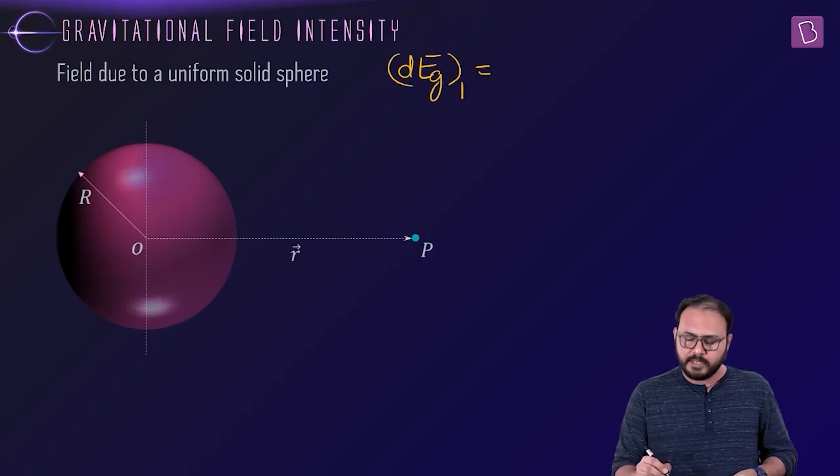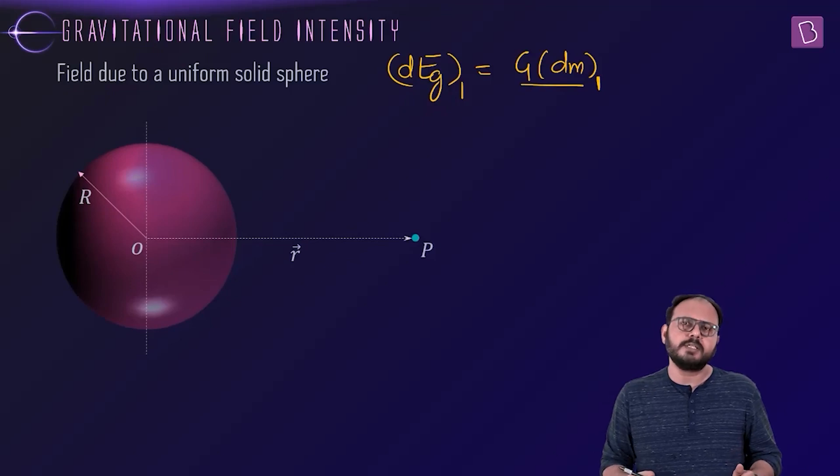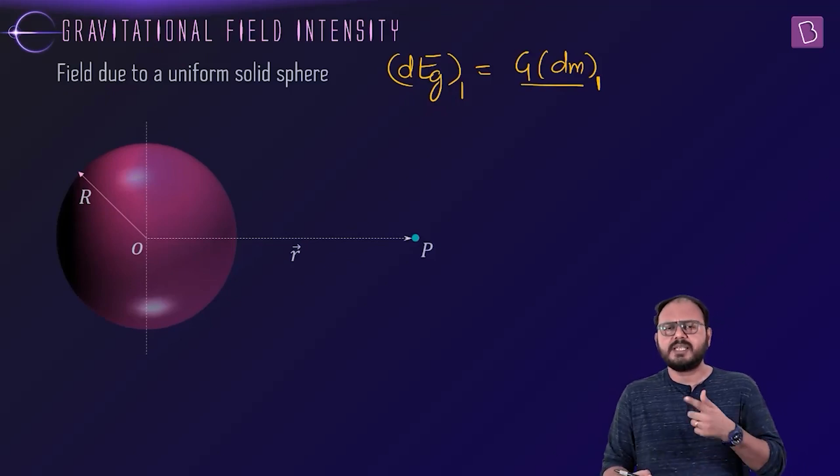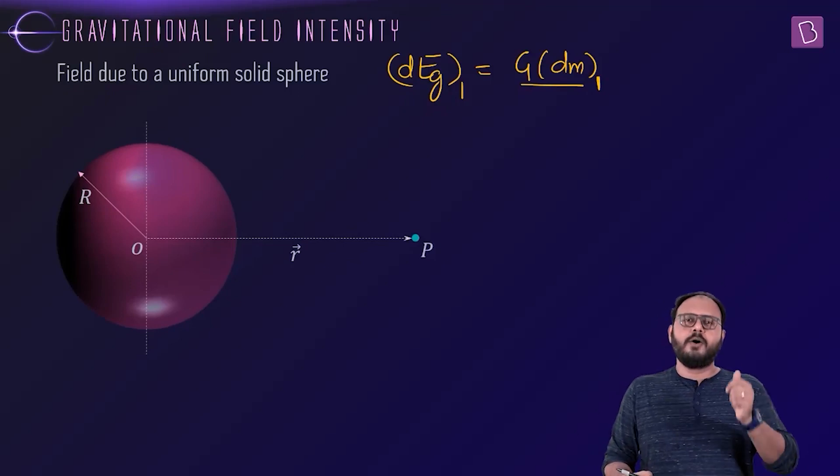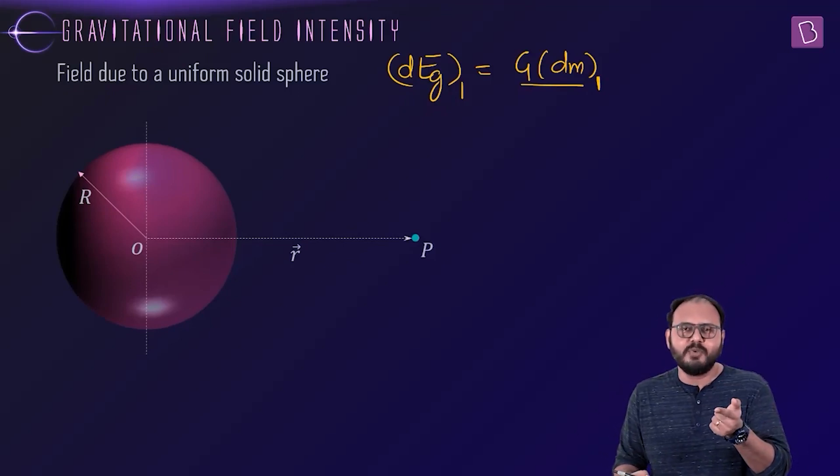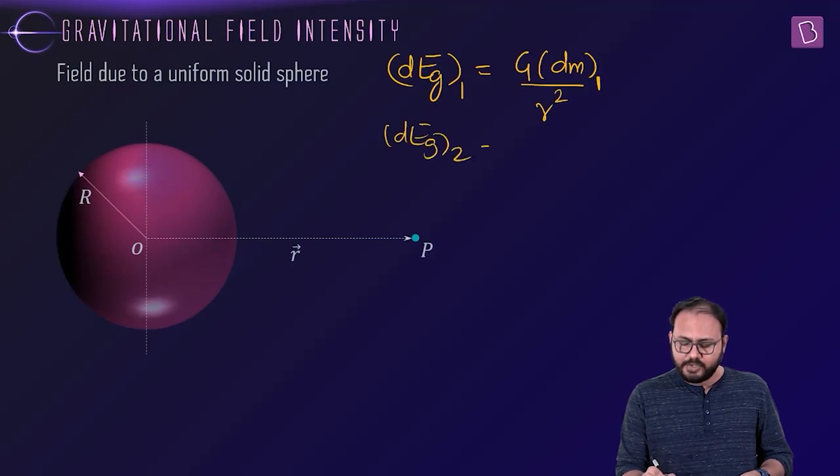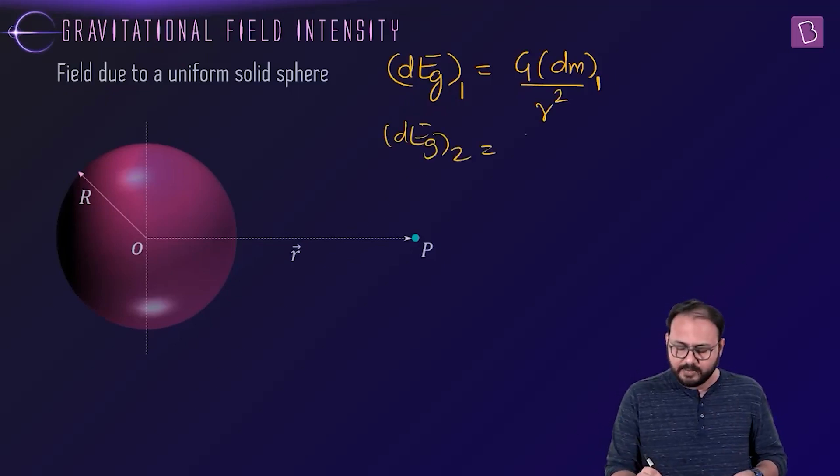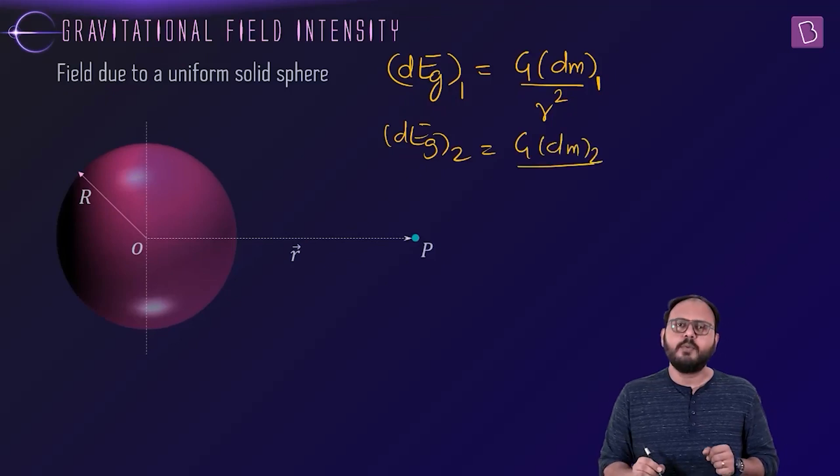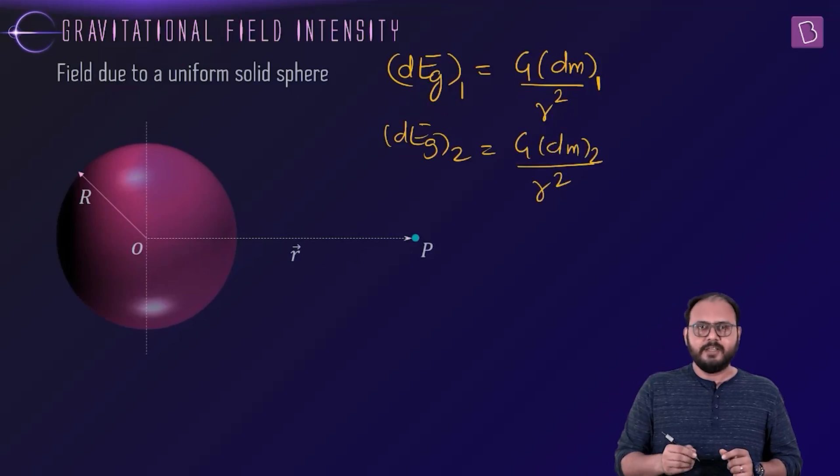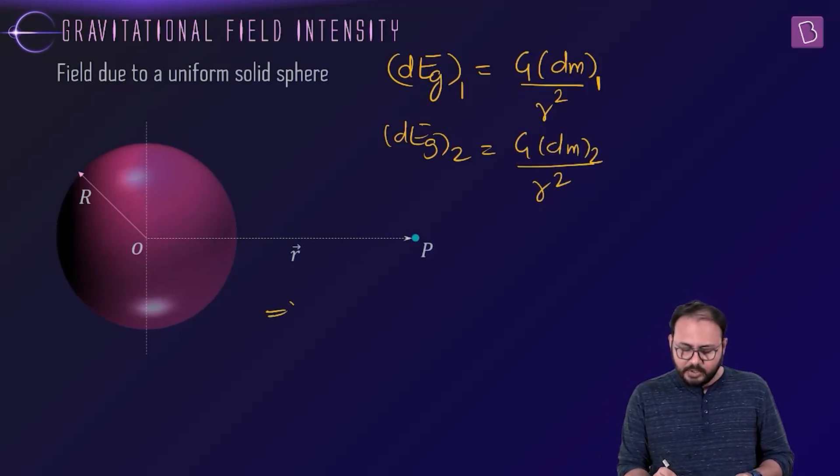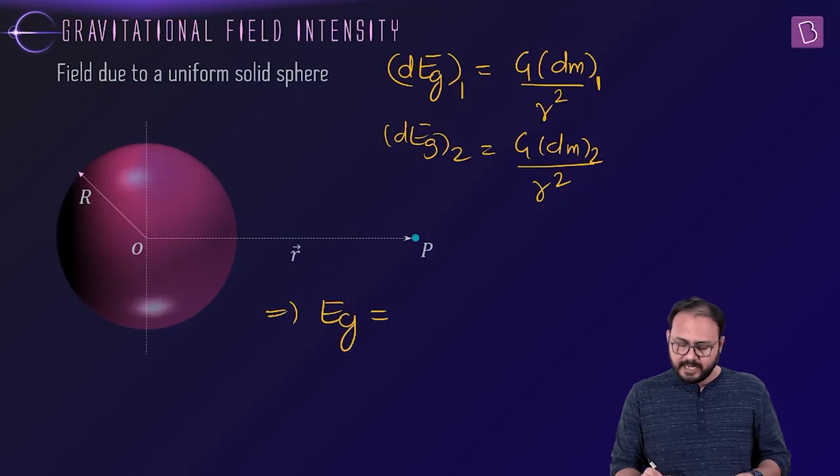Let's say the first shell makes dEg1. Can I say g dm1 upon what? Upon its own radius? No. Shell theorem says it's an outside point, so assume the mass to be focused at the center and treat it like a point mass. So the distance is r square. I see. dEg2, the second shell, is g dm2 by r square. If you add all the dEg's, you will get Eg.